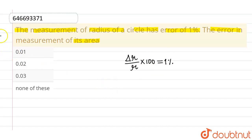So we know that area of circle is given by πr². Now, if I try to write the error equation for the same,